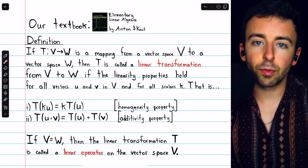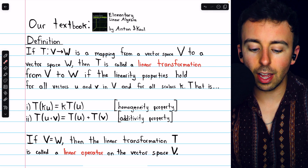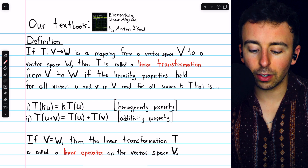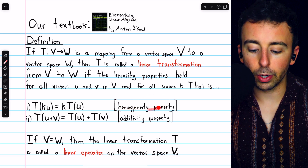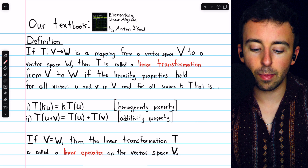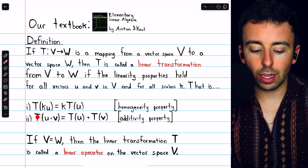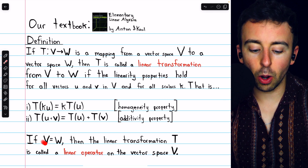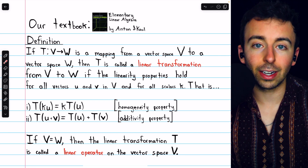The definition should be no surprise from our previous discussions of matrix transformations. If T is a transformation from a vector space V to a vector space W, then T is called a linear transformation from V to W if the linearity properties hold for all vectors U and V in the vector space V, and for all scalars K. Those linearity properties are the homogeneity property — the transformation of a scalar multiple of a vector should be the scalar multiple of that vector's image, so you can pull the scalar out of the transformation. The other property is the additivity property — the transformation of a sum of vectors should be the sum of their images. In the case where V equals W, we say the linear transformation T is a linear operator on V.